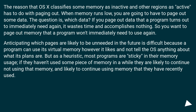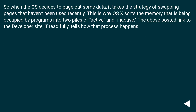Anticipating which pages are likely to be unneeded in the future is difficult because a program can use its virtual memory however it likes and not tell the OS anything about its plans. But as a heuristic, most programs are sticky in their memory usage: if they haven't used some piece of memory in a while, they are likely to continue not using it, and likely to continue using memory they have recently used. So when the OS decides to page out data, it takes the strategy of swapping pages that haven't been used recently. This is why OS X sorts memory into two piles: active and inactive.